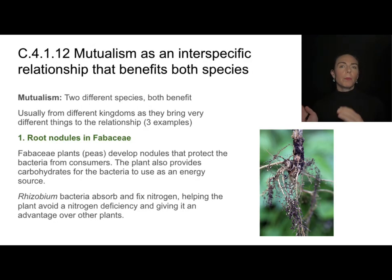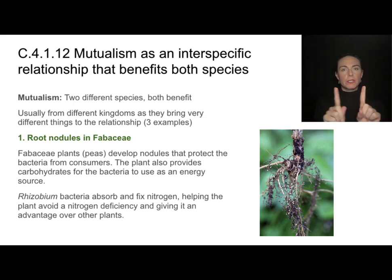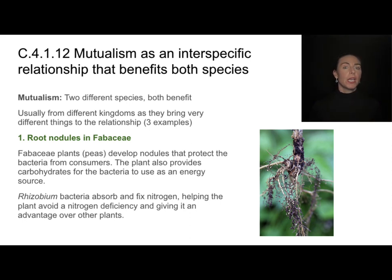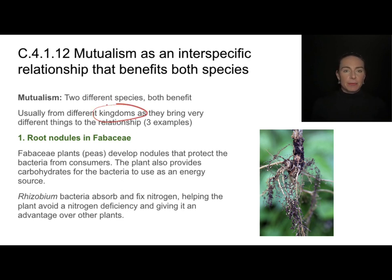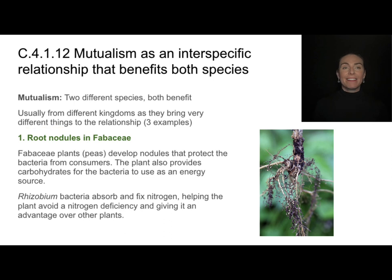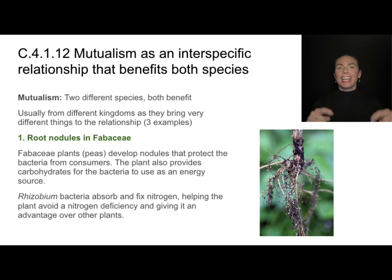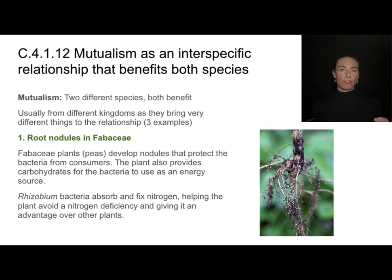Going back to the concept of mutualism — an interspecific relationship between two different organisms — most examples involve species from different kingdoms, like animals, plants, and bacteria, because they bring very different things to the relationship. It's unlikely they would compete for the same niche. If they were too similar, they would probably be competing with each other instead.